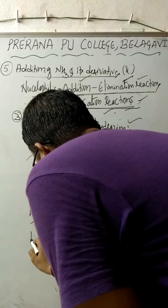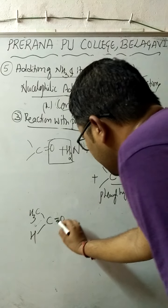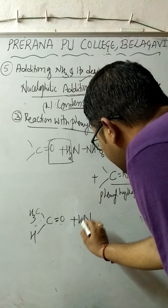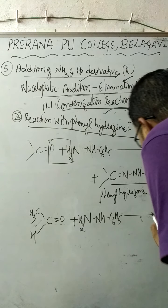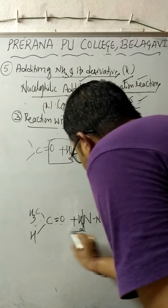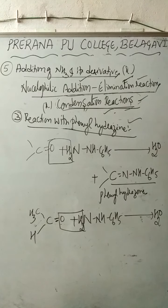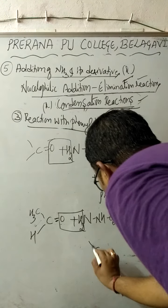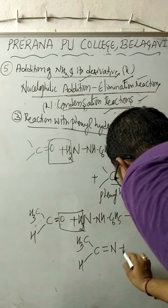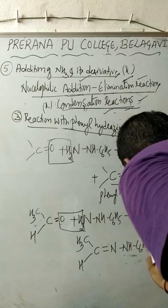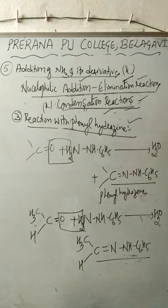For example, when acetaldehyde (CH3CHO) is made to react with phenylhydrazine, a water molecule gets eliminated. The product obtained is CH3-CH=N-NH-C6H5, which is known as a phenylhydrazone.